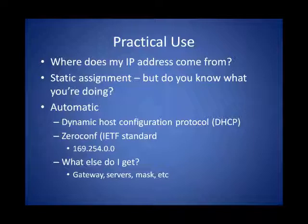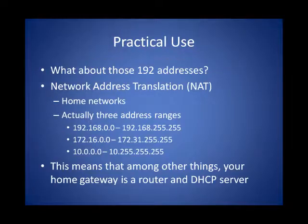Dynamic Host Configuration Protocol is usually what we use to give out IP addresses, and it also gives us a whole bunch of other things like servers, gateways, and name servers that allow us to communicate on the network. Now that we know we can have a wide variety of IP addresses and reside on many different kinds of networks, where did those 192 addresses come from? It turns out that 192 is actually part of what we call private addressing, and these are used in conjunction with Network Address Translation, or NAT. There are three different address ranges associated with private addressing. One of the most common places you'll see 192 or private addressing used is in SOHO networks, especially in homes.